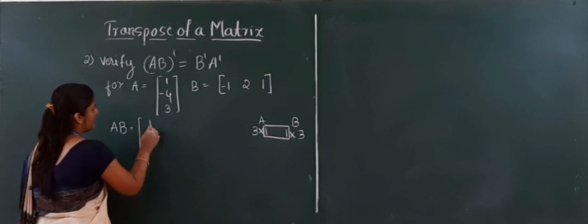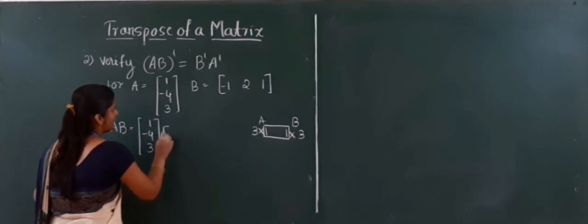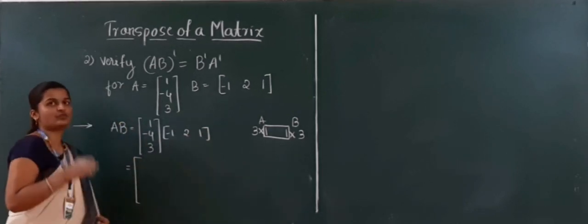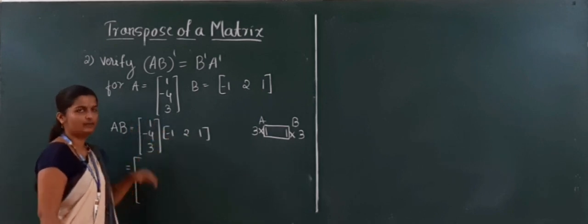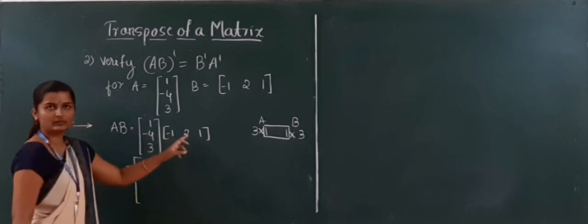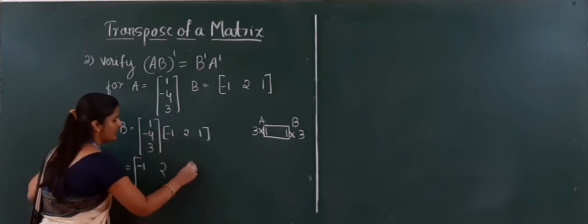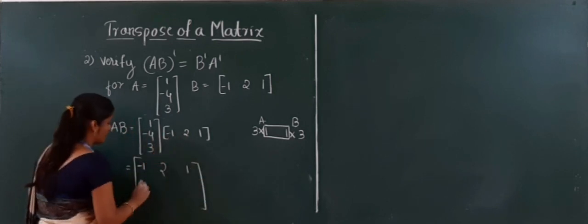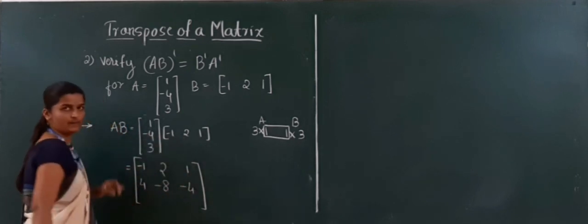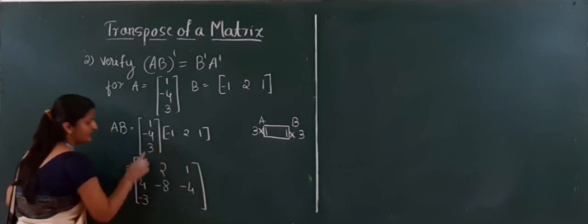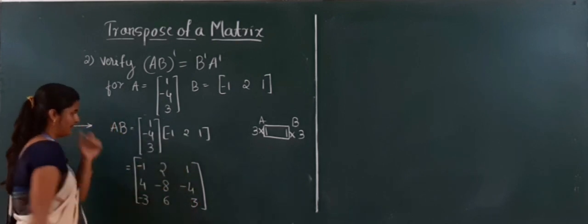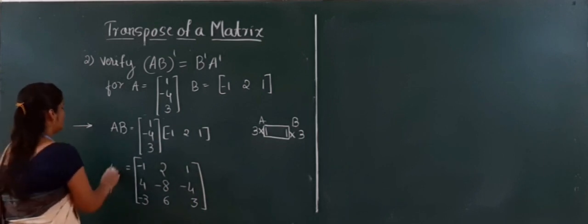Multiplying A and B using row-to-column process: A is 1, minus 4, 3 and B is minus 1, 2, 1. We get a 3 by 3 matrix: row 1 gives minus 1, 2, 1; row 2 gives plus 4, minus 8, minus 4; row 3 gives minus 3, 6, 3. This is our AB.